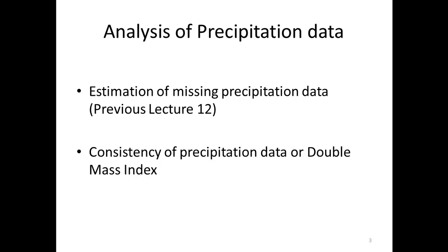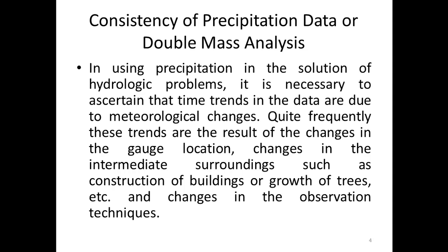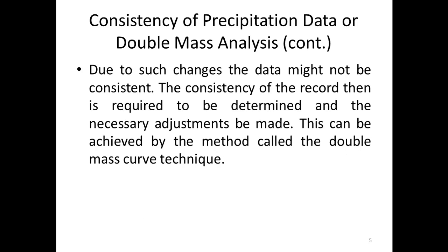We will cover the double mass analysis method used for analysis of precipitation data. When using precipitation in the solution of hydrologic problems, it is necessary to ascertain that time trends in the data are due to meteorological changes. Quite frequently, these trends are the results of changes in the gauge location, changes in the surroundings such as construction of buildings or growth of trees, and changes in observation techniques. Due to these changes, the data might not be consistent. The consistency of the record is required to be determined and the necessary adjustments must be made, which can be achieved by the double mass curve technique.